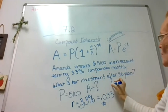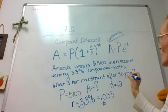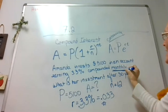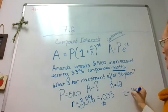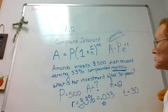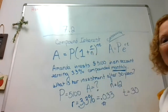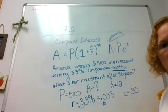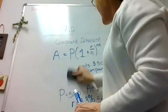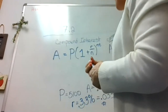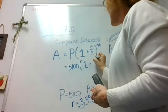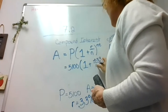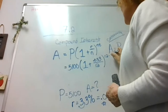Compounded monthly tells me what N is going to be — 12, because there are 12 months in a year. So N = 12. And what is her investment after 30 years — so T = 30. Now we're going to take all these numbers and plug them into the formula: 5100 × (1 + 0.033/12)^(12 × 30).